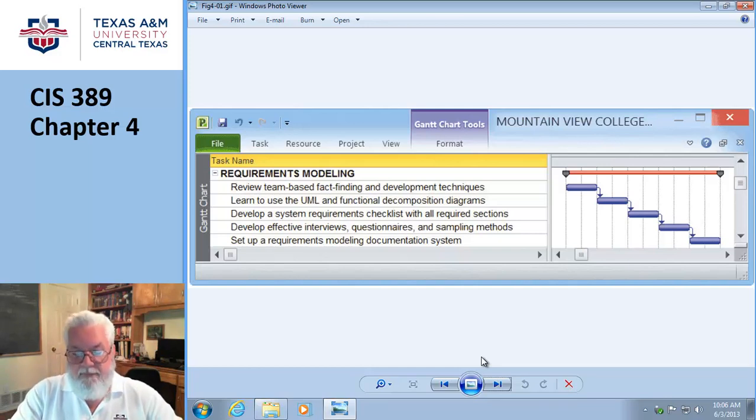Chapter objectives. I'm just going to skim through them really quick. Describe system analysis phase activities. Explain joint application development, rapid application development, and agile methods. Use a functional decomposition diagram to model business functions and processes. Describe the unified modeling language and provide an example of a UML diagram. Describe system requirements, including inputs, outputs, those kinds of things. Explain the concept of scalability. Use fact-finding techniques to include interviews and those kinds of things. Define total cost of ownership. Conduct a successful interview. And develop effective documentation. So those are the things that we're going to learn.